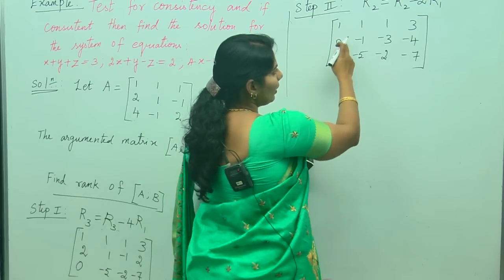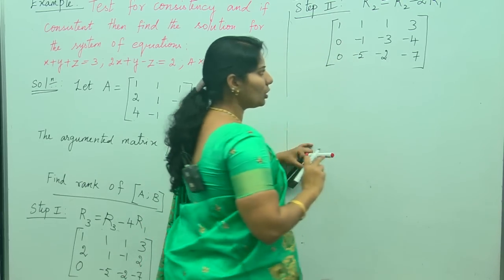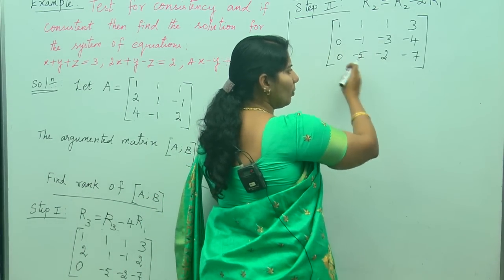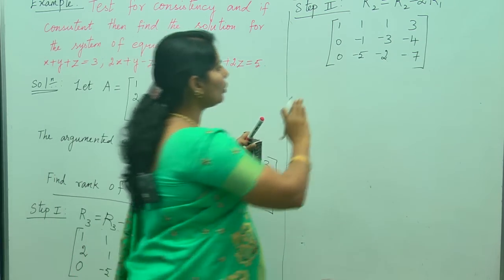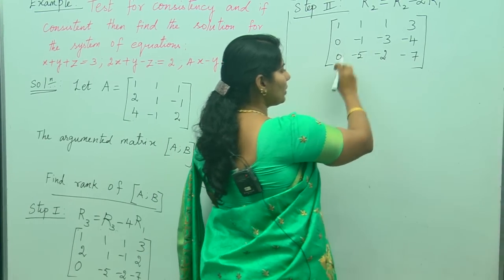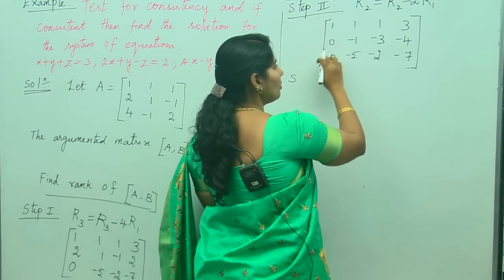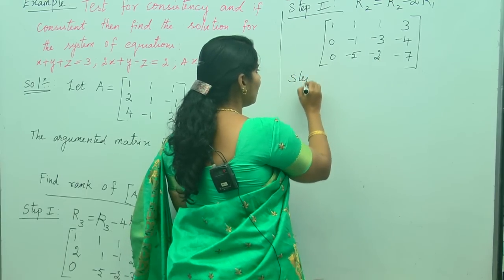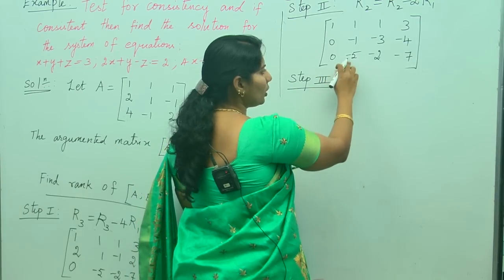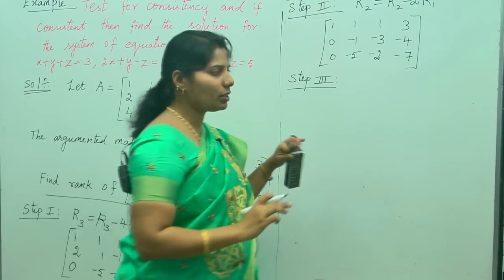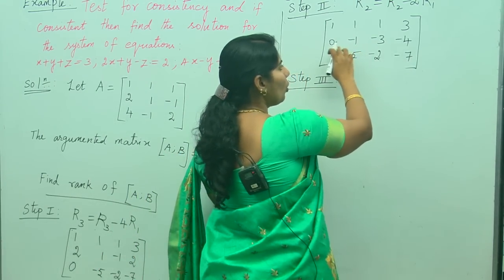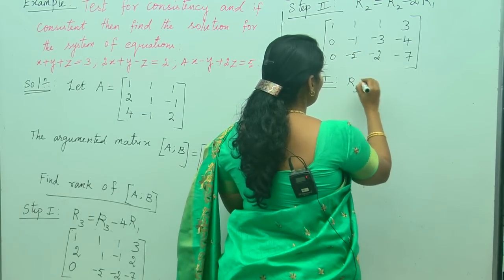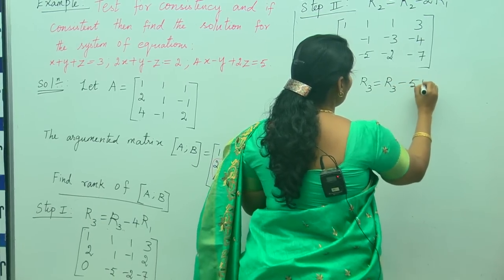We have made the first element of the second and third rows zero. Students often make the mistake of immediately moving to the second element of the third row after step 1. You should first make the third row's first element zero, then the second row's first element zero, and only then move on to the third row again. So step 3 is to make the second element of the third row — which is minus 5 — equal to zero, using the second row. Apply R3 = R3 minus 5R2.